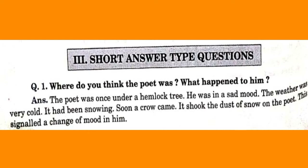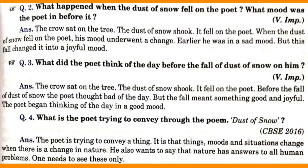Next question: Where do you think the poet was and what happened to him? Answer: The poet was once under a hemlock tree. He was in a sad mood. The weather was very cold and it had been snowing. Soon a crow came and it shook the dust of snow on the poet. This signaled a change of mood in him.